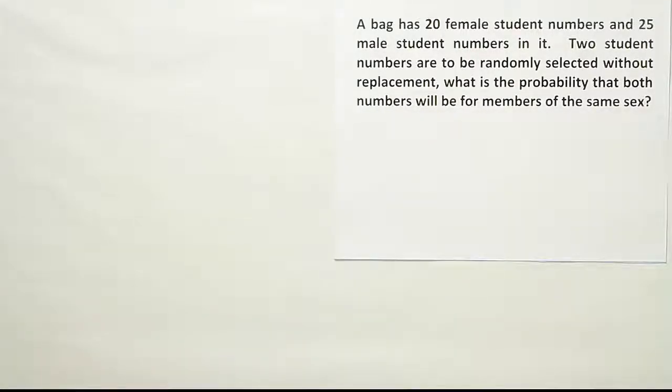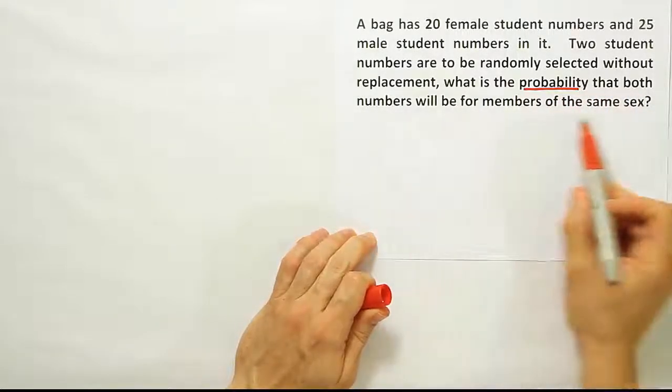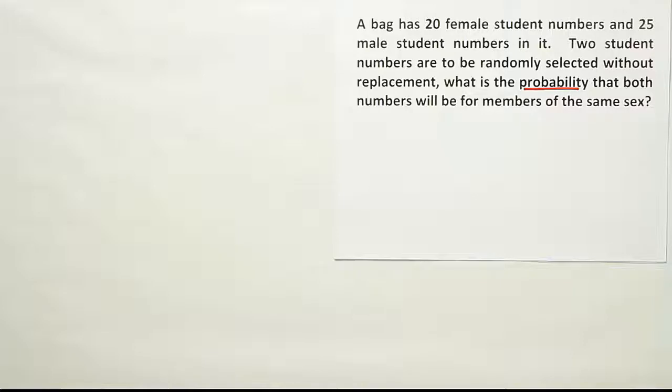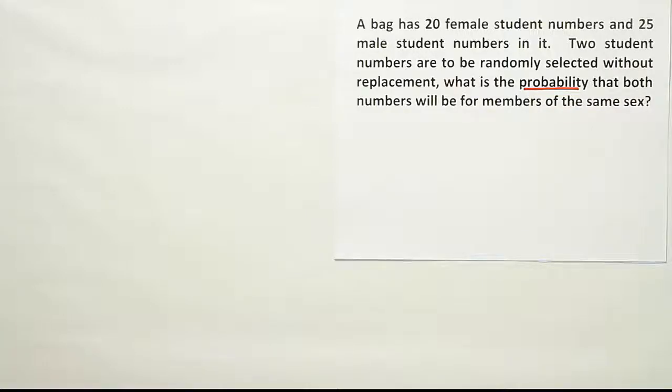Okay, so this is a probability question. So we see that, what is the probability? And it says probably that both numbers will be for members of the same sex. So when I work this out, I might think, well gee, they're selecting two numbers, so I'm probably thinking that it's multiplication rule of probability, right?